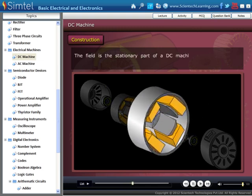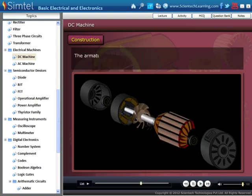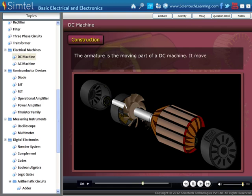Now, the field is the stationary part of DC machine. A field is usually constructed out of magnetic poles. The armature is the moving part of a DC machine. It moves in the field to complete the DC machine's electromechanical energy conversion.